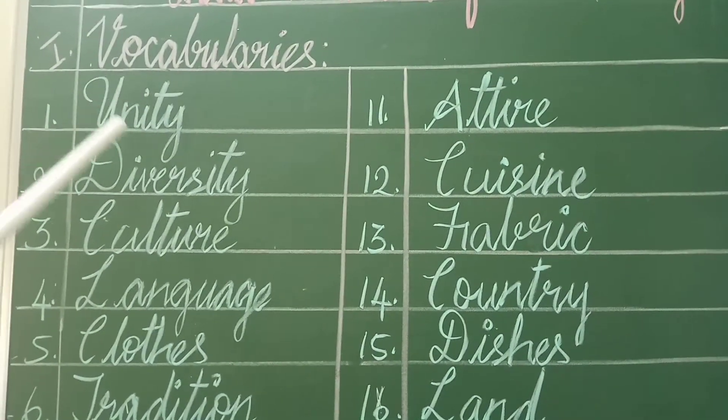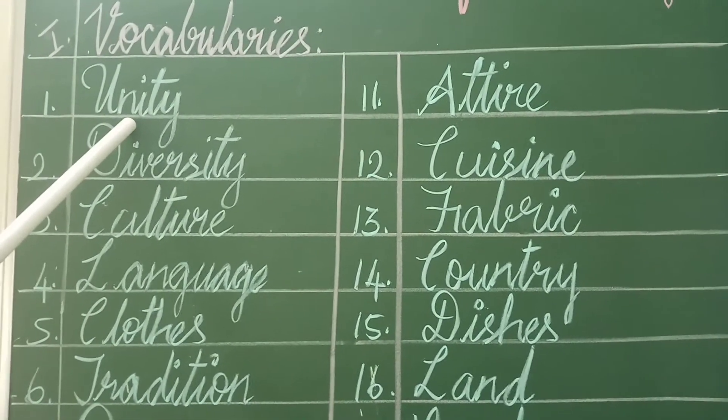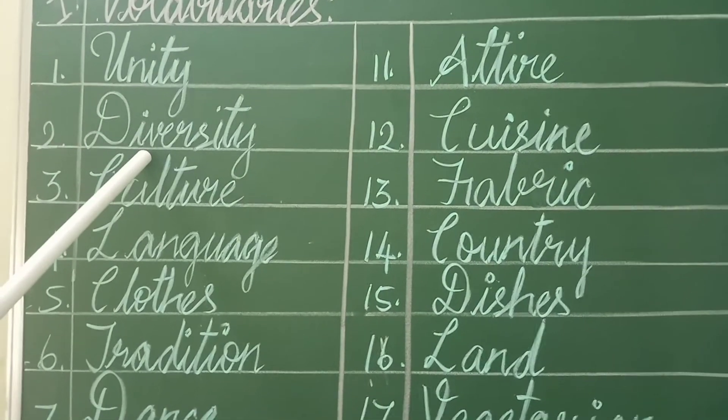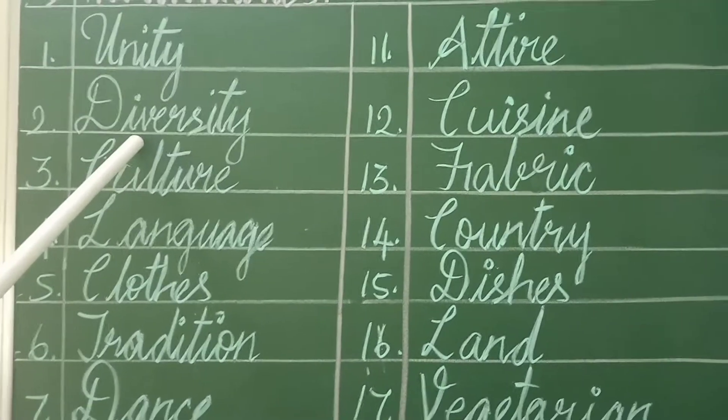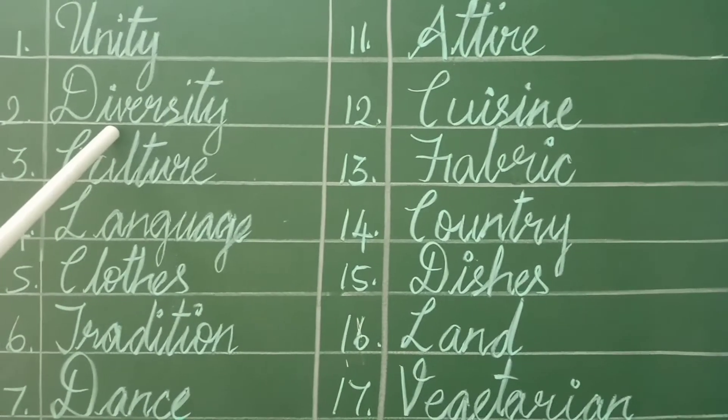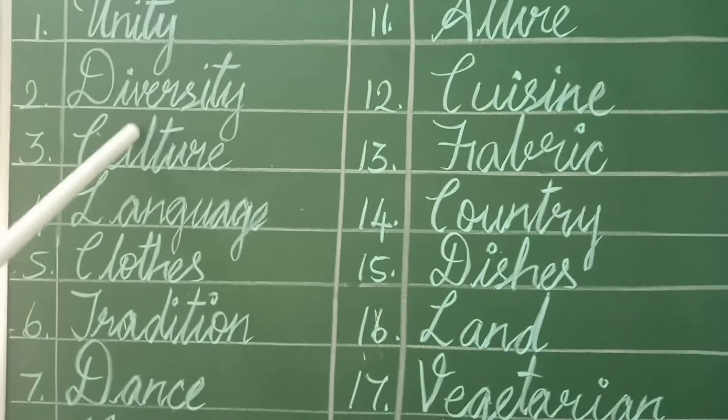Unity — it means the state of being joined. Got it? Diversity — it means the state of being diverse. Got it.